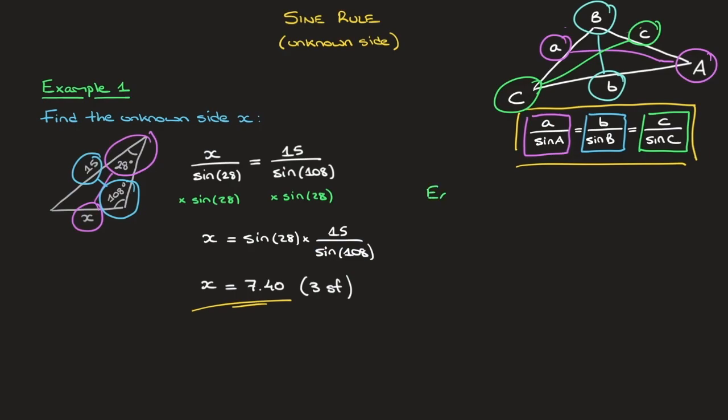I'll just write example 2, and let's say we're given a triangle looking something like this. There we go. With a side length of 8 here, and an angle of 53 degrees, an angle of 95 degrees here, and we need to find X.